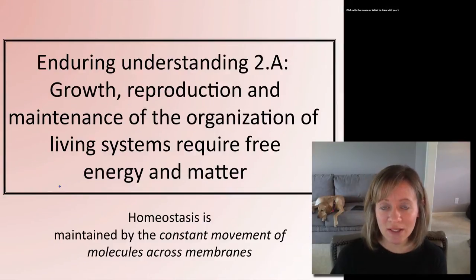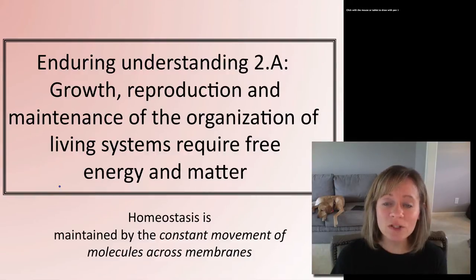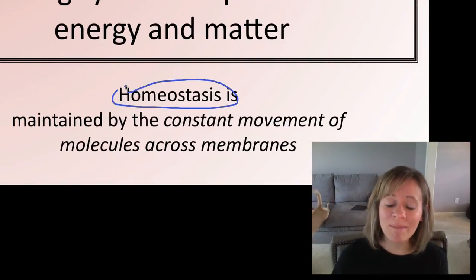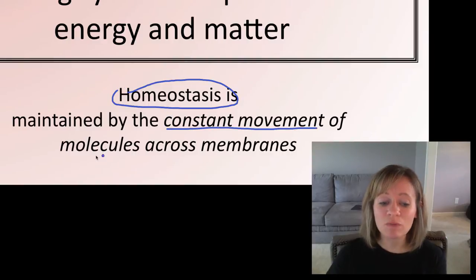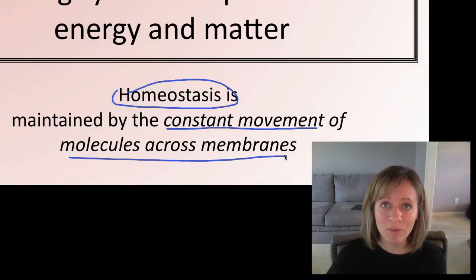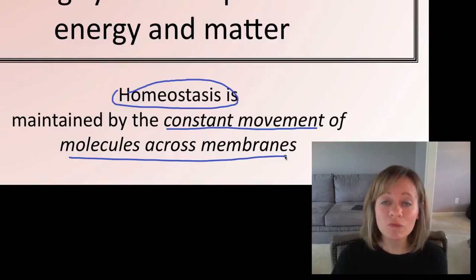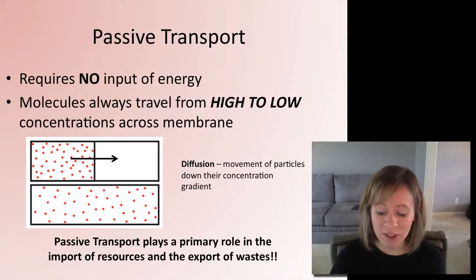The reason we're looking at this — the Enduring Understanding umbrella — is that the maintenance or homeostasis of an organism requires free energy and matter. Your cell and all living systems have to maintain some sort of balance, some sort of regulation, and that is done by constant movement of molecules across membranes. Your cell is never lazy; there's always movement to maintain homeostasis. So the first type of transport is passive transport.